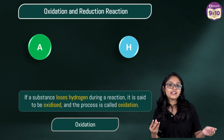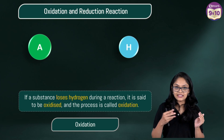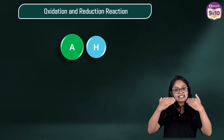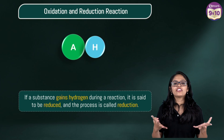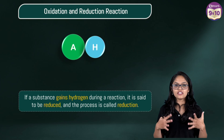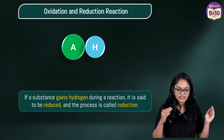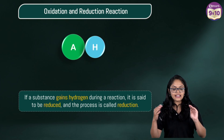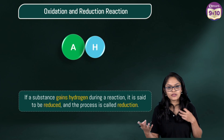What if a hydrogen atom gets added? If a substance gains a hydrogen atom, then it is called reduction — that process is called reduction. If a substance gains hydrogen during a reaction, it is said to be reduced and the process is called reduction.